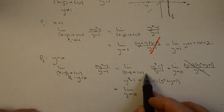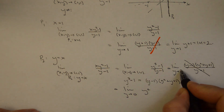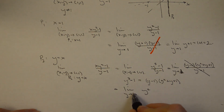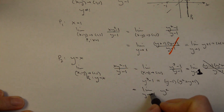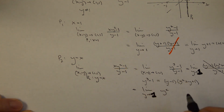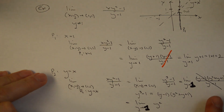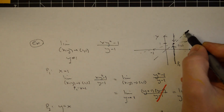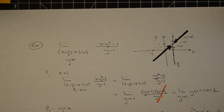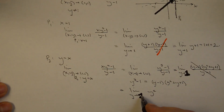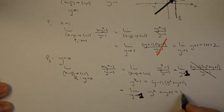Correcting the earlier slip: this is the limit as y→1, not y→0. As y approaches 1 along the path y=x, we evaluate y²+y+1 at y=1, giving 1+1+1 = 3.